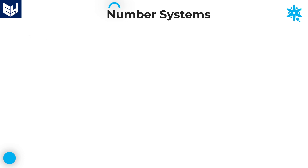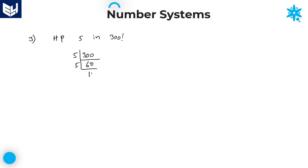Let's see one more example. Find the highest power of 5 in 300 factorial. Here, 5 is a prime number, so no need to convert into prime factors. You need to divide 300 by this prime number. 300 divided by 5: 60 times. Again divide by 5: 12 times. Again divide by 5: 2 times. All these values are quotient values.